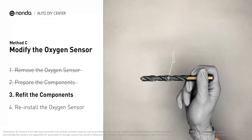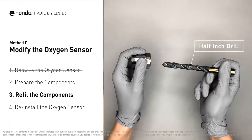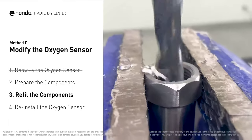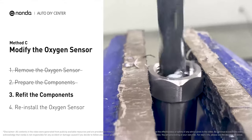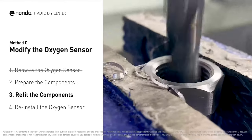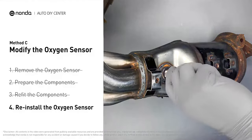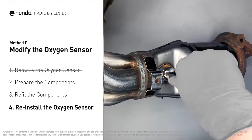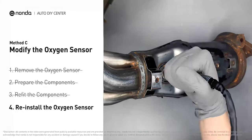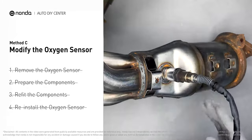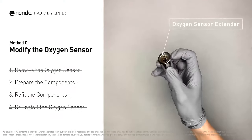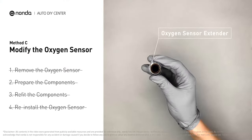Use a half-inch drill to refit it. By doing this, the spark plug non-fouler now has enough space to fit into the oxygen sensor. Put them together and put them back on the catalytic converter. If you find refitting the component too complicated, you can also get parts like an oxygen sensor extender or oxygen sensor socket to create that space.